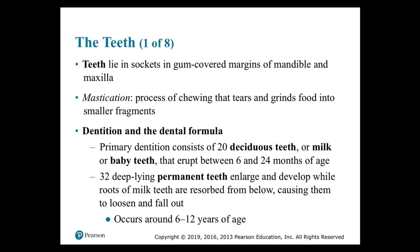Dentition and the dental formula: primary dentition consists of 20 deciduous — or milk or baby — teeth that erupt between 6 and 24 months of age. Deciduous, like deciduous leaves, means they fall off. And 32 deep-lying permanent teeth enlarge and develop while roots of milk teeth are resorbed from below, causing them to loosen and fall out around 6 to 12 years of age.